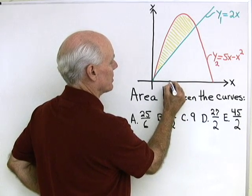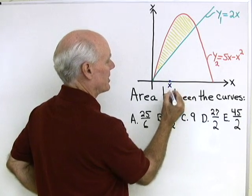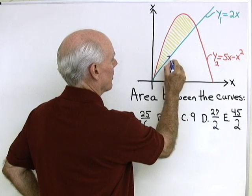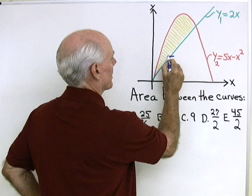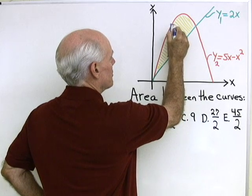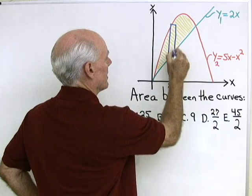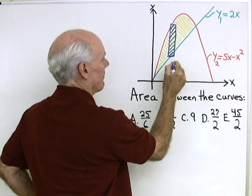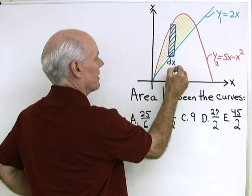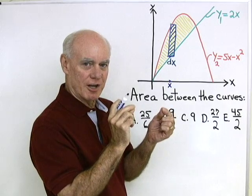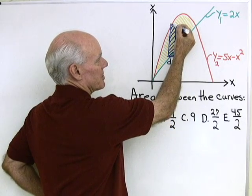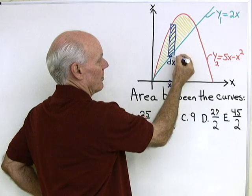What I'm going to do is go to some point here on the x axis, x, and then go up to the curve and draw in my little test rectangle. That test rectangle is going to have a thickness of dx because it's got a horizontal thickness like that.